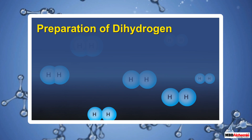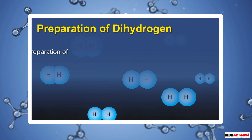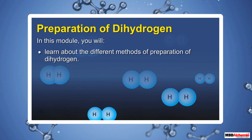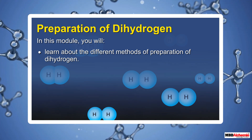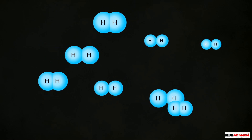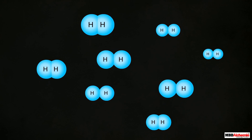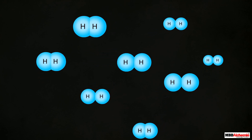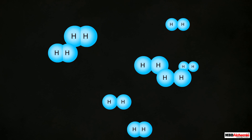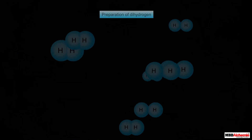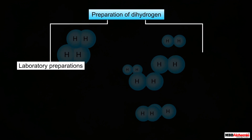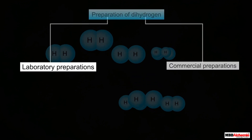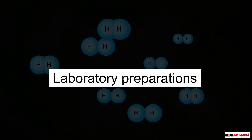In this module you will learn about the different methods of preparation of dihydrogen. We already know that dihydrogen is available abundantly in the universe. However, there are various methods by which it can be prepared. These preparations can be broadly grouped into laboratory preparations and commercial preparations.